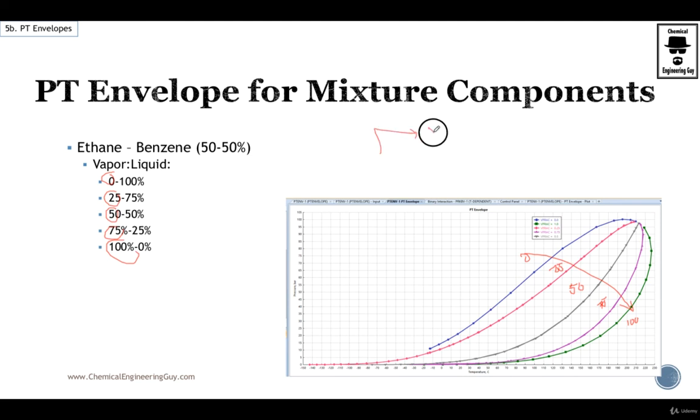Maybe you're wondering why you'd want to do that. Well, maybe you have a mixture you input into a flash and you need to identify the temperature and pressure at which you should separate this mixture to get 50% in the vapor phase and 50% in the liquid phase.